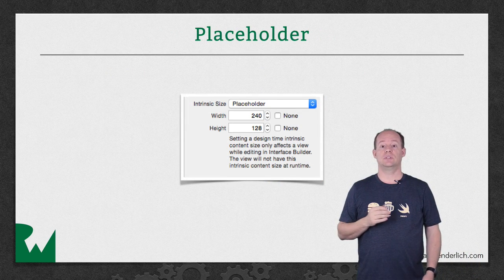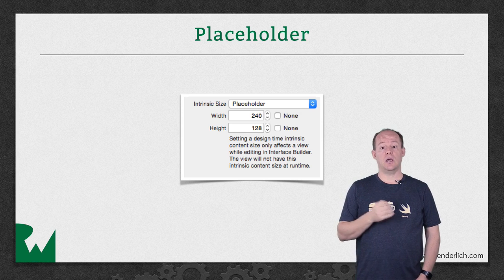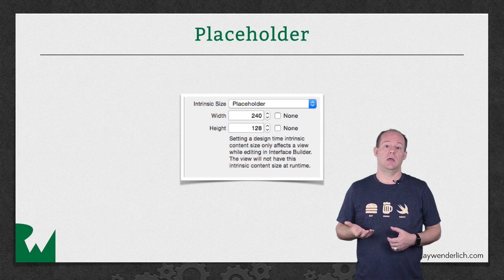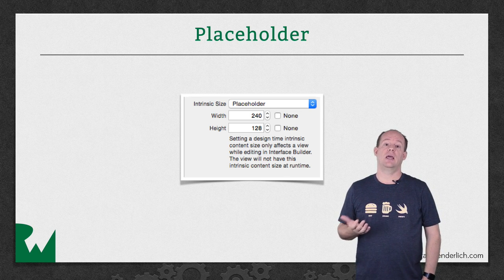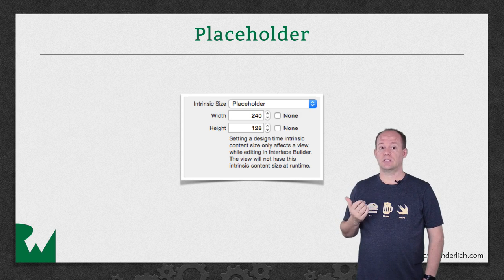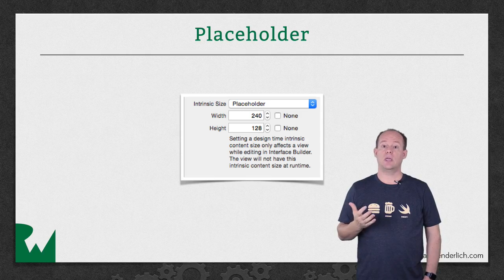One final note about intrinsic content size: sometimes the content of a view will be set in code and it will have an intrinsic content size, but Interface Builder doesn't know what it is. To avoid Interface Builder errors without having to define extra constraints, you can define a placeholder intrinsic size. As you can see from the text in Xcode, these values are only used at design time. You're still responsible for making sure the intrinsic size is set at runtime.